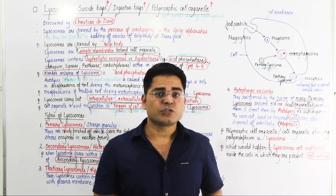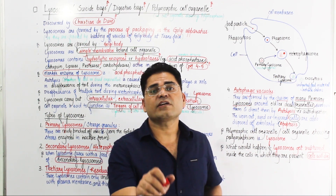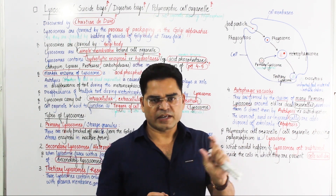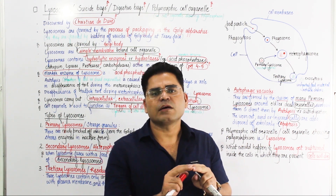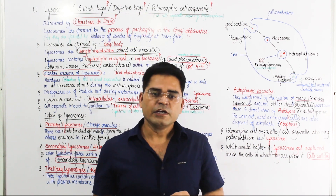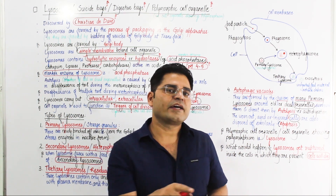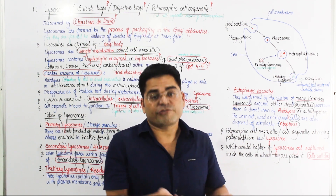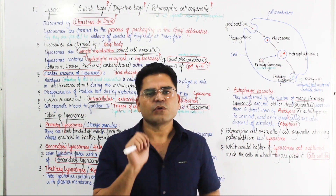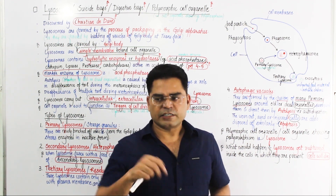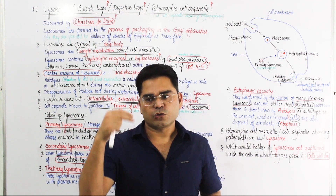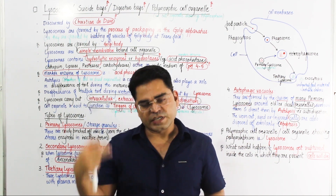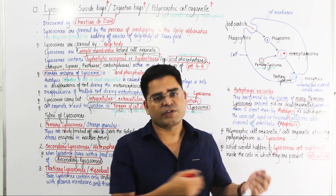Lysosome is also known as a polymorphic cell organelle. The reason it is called polymorphic is that when we study lysosomes in detail, we find many forms: primary lysosome, secondary lysosome, tertiary lysosome, and autophagic vacuole.